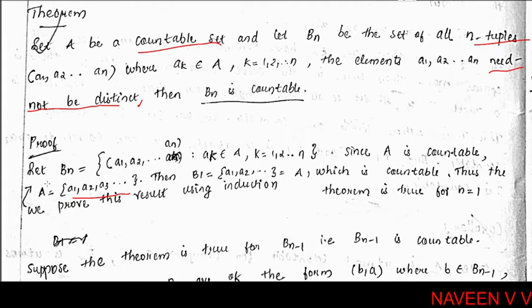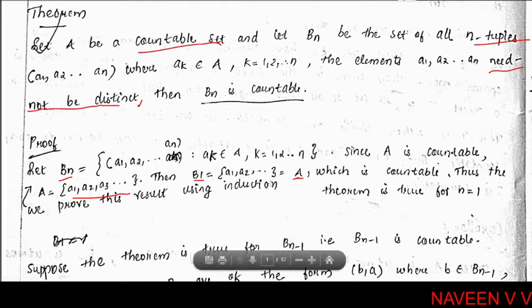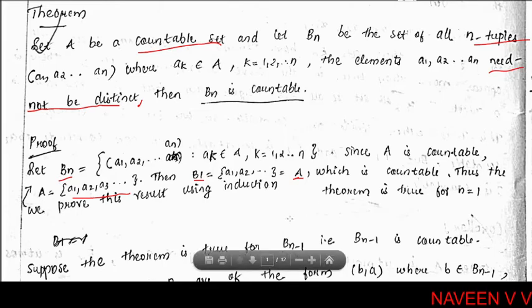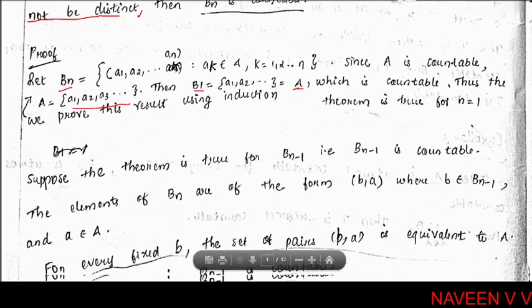We will use induction to prove this. For the base case, B₁ is the set of all 1-tuples (a₁), which is the same as A. Since A is countable, B₁ is countable. So for n equal to 1, the result is true.